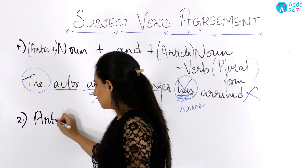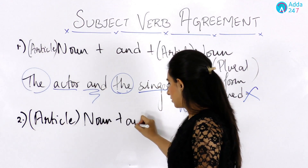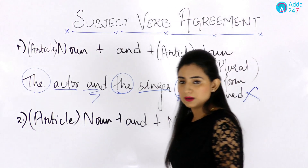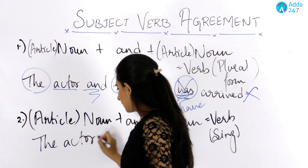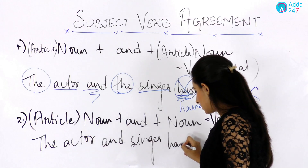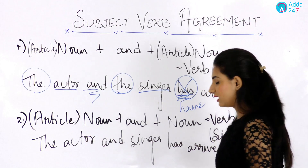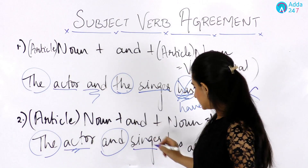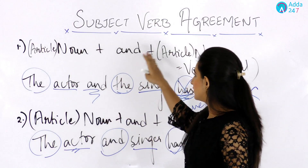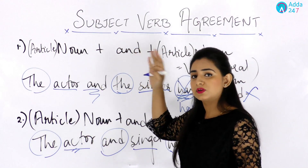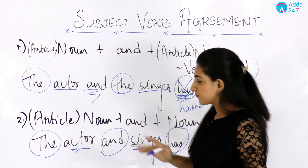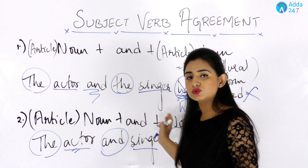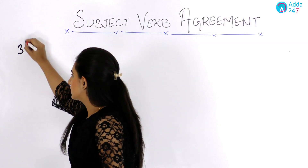The exception to this rule: if we have an article before the first noun but not before the second noun, we use a singular verb. For example, 'The actor and singer has arrived' is correct. When an article appears before both nouns, it represents two different identities — hence a plural verb. But when the article appears only before the first noun, it represents one identity, so we use a singular verb.